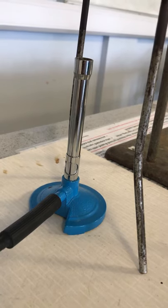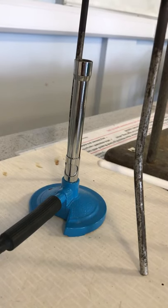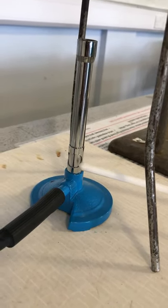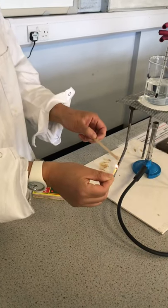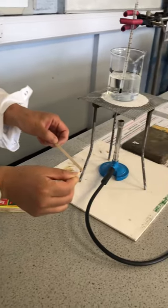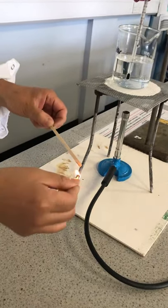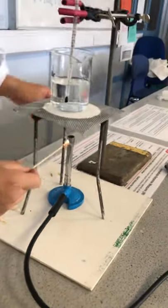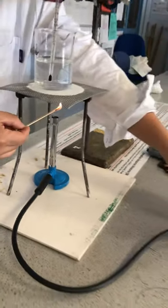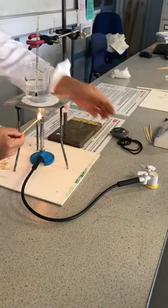Before you light the Bunsen burner, make sure the air hole is completely closed. With the lit wooden splint, light the Bunsen burner by placing the wooden splint over the nozzle of the Bunsen burner and at the same time turn the gas tap on.